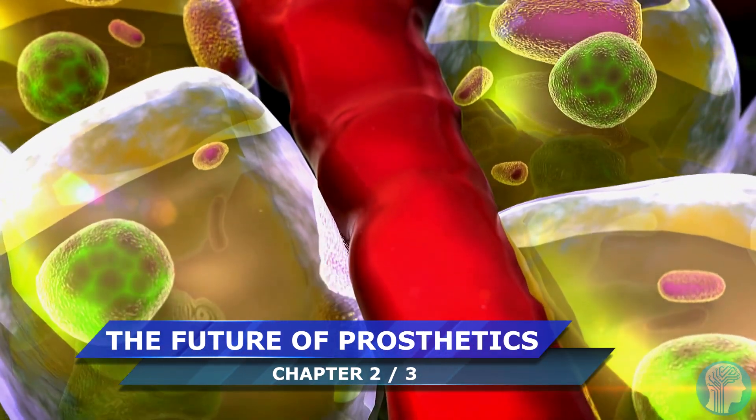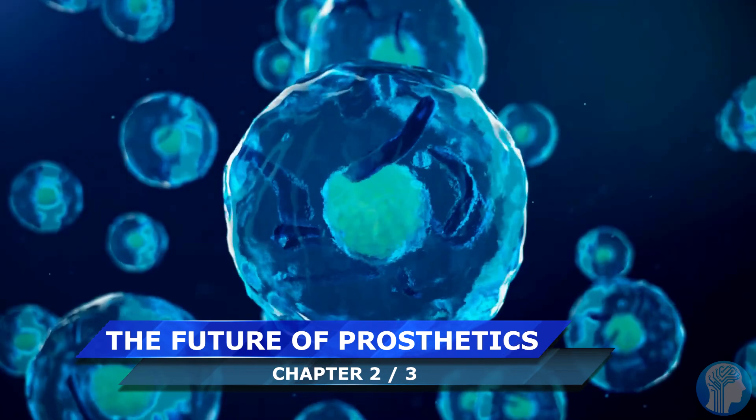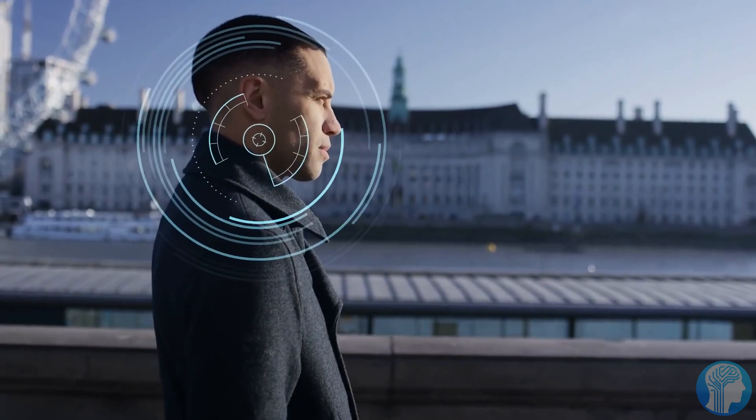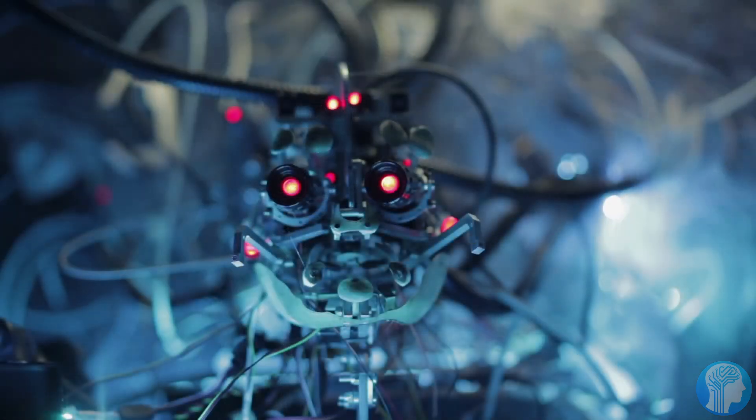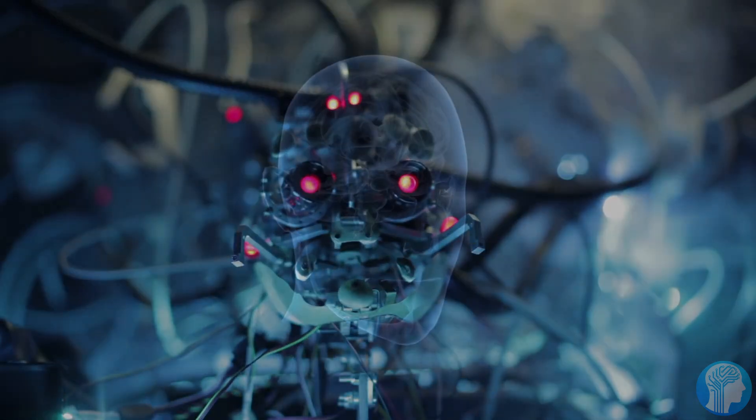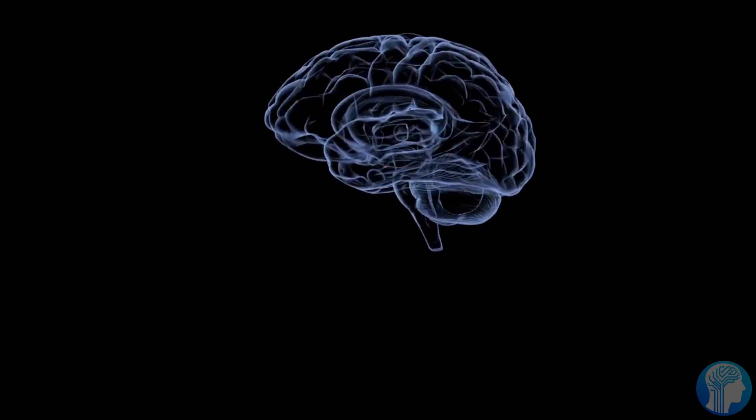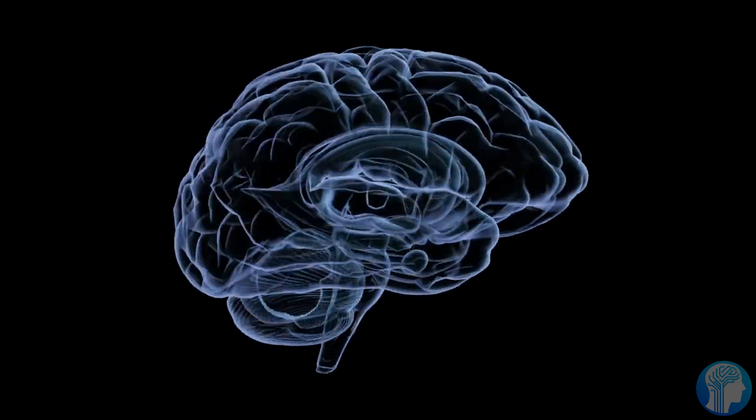Now imagine the transformative impact this technology could have on the lives of amputees. With the ability to directly connect 3D-printed prosthetics to the brain, a new era of prosthetic limbs is on the horizon. Amputees could potentially experience a level of control and dexterity like never before.